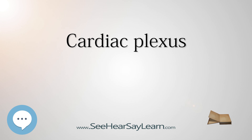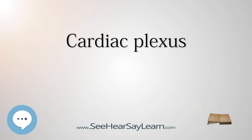The superficial part of the cardiac plexus lies beneath the arch of the aorta, in front of the right pulmonary artery. It is formed by the superior cardiac branch of the left sympathetic trunk and the inferior cervical cardiac branch of the left vagus nerve.